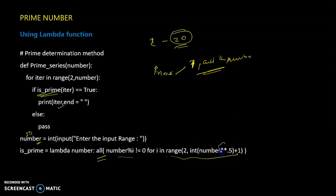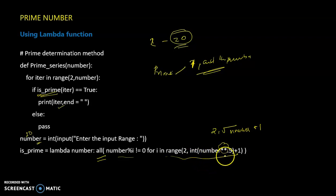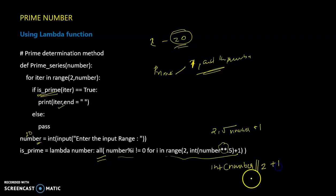If you use double star, the value of i ranges from 2 comma to the square root of i plus 1. The value of i means we check up to half of the number. If the number is equal to half of the number, it is divisible.